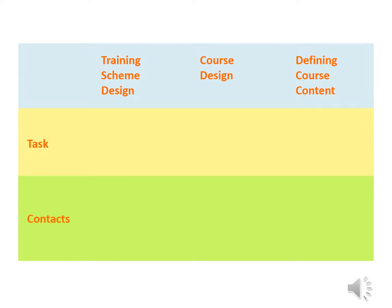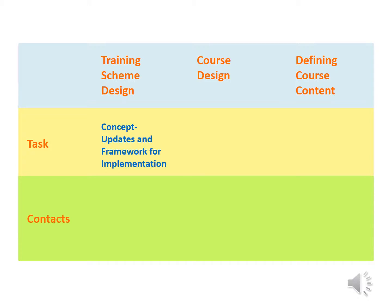In education, there are three steps to course development: training scheme design, course design, and definition of course content. Training scheme design provides a means to modernise organisations and management. In universities, implementing the system of BSc to MSc and PhD is an example.